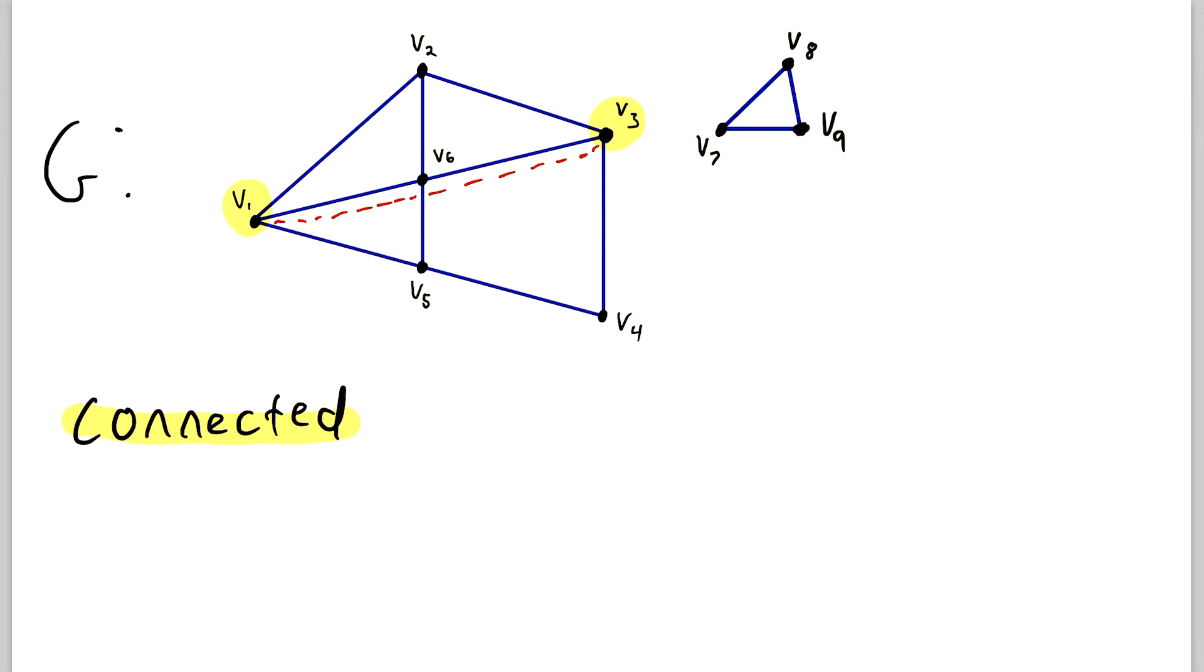Two vertices are connected if and only if there exists some path that connects them. Of course, in this case, there are multiple paths that connect these vertices. You could have got there by going this way, or going this way, or a number of other ways.